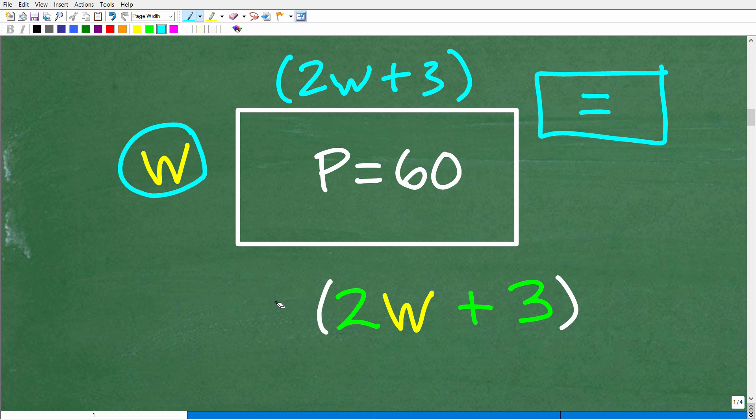Typically, you want to try to set up equations with the least amount of variables needed. The length really is 2W plus 3. That is the length. What we want to do is set up one equation with one variable. And that variable is W. If we can figure out what W is equal to, if we could solve for W, then I can get the width and the length.